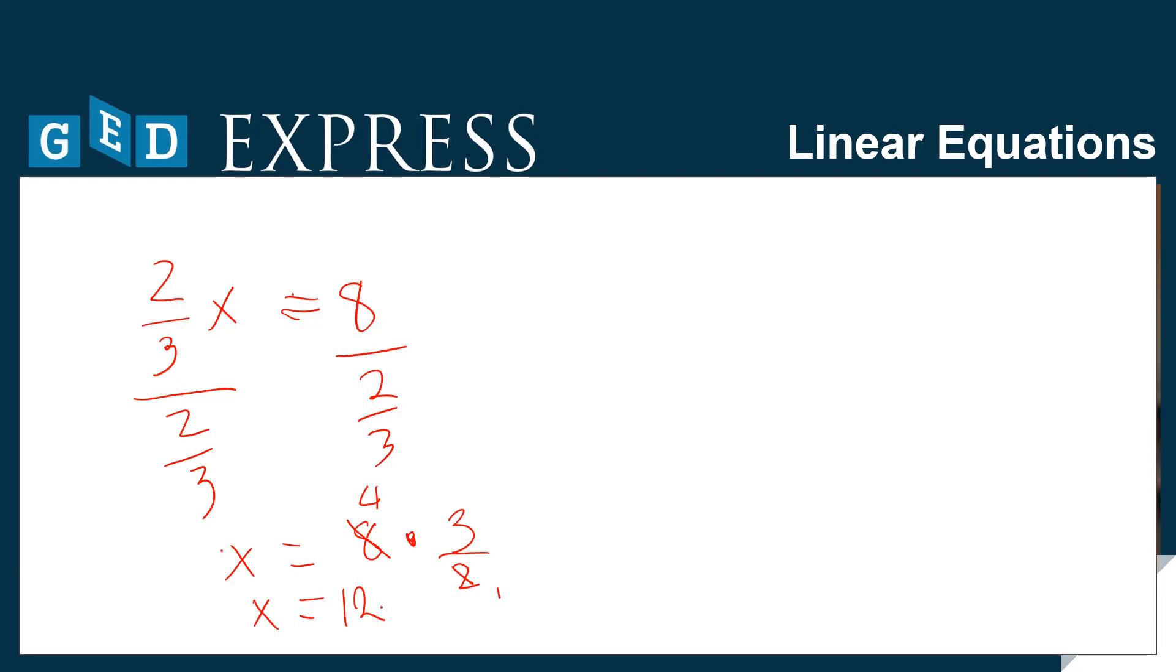Okay, another example. This one is not just a one-step equation, this is a two-step equation. 4x minus 1 equals 7. Now, in this case, you should start with undoing the subtraction or addition. So let's undo the subtraction first. Minus 1, we can undo minus 1 by adding 1 on both sides. So plus 1.